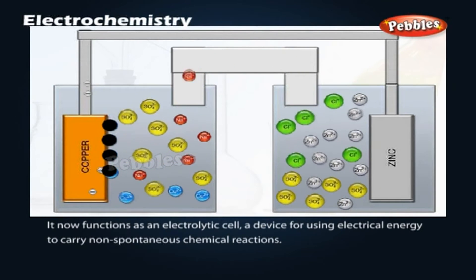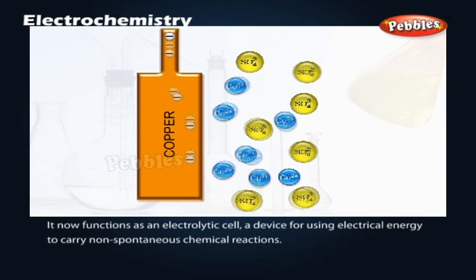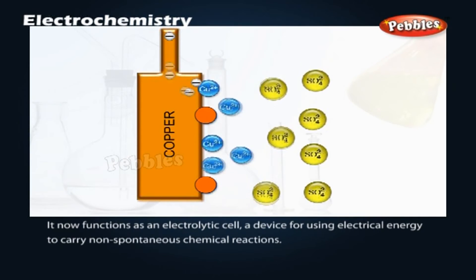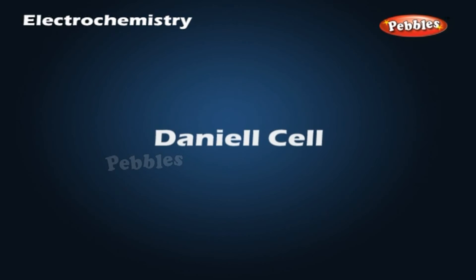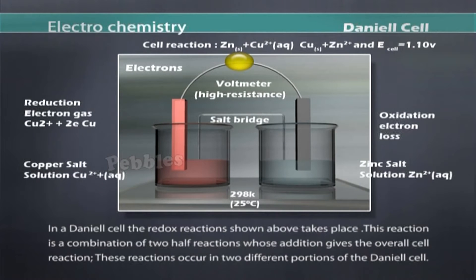Daniel cell. In a Daniel cell, the redox reactions shown above takes place. This reaction is a combination of two half reactions whose addition gives the overall cell reaction. These reactions occur in two different portions of the Daniel cell.